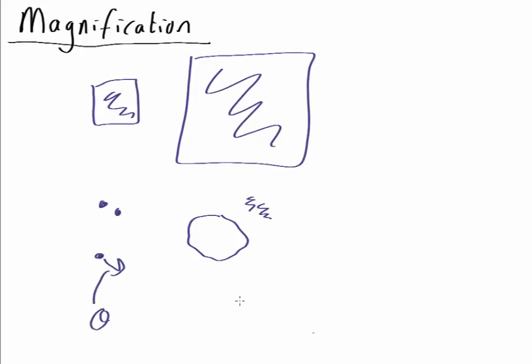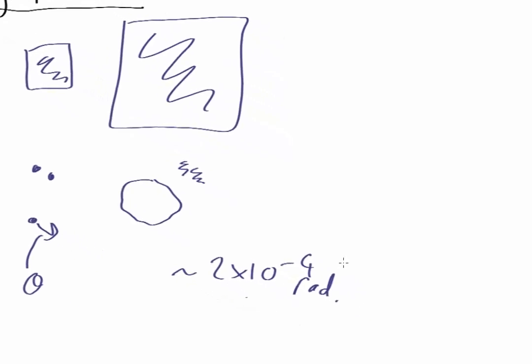And we've seen that for a typical smartphone camera this is about 2×10^-4 radians, which is about one arc minute.